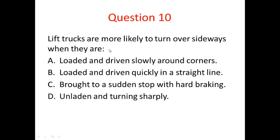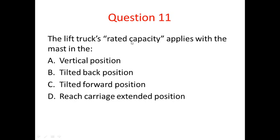Question ten: lift trucks are more likely to turn over sideways when they are doing what? The answer is when they are carrying no load and when they are turning sharply. Because of the stability triangle, the narrowest part of that triangle is near the back of the truck, near the central wheel. So the combined centre of gravity of the load and the truck is more easily moved outside of the triangle in a lateral manner. Placing a load on the front draws the centre of gravity further forward, making the vehicle more stable laterally. So if it's unladen and turning sharply, it's very likely to tip over. The answer is D.